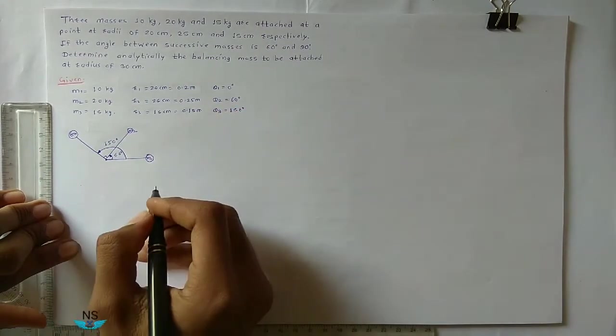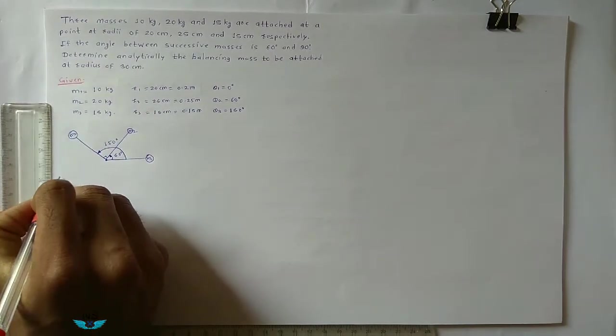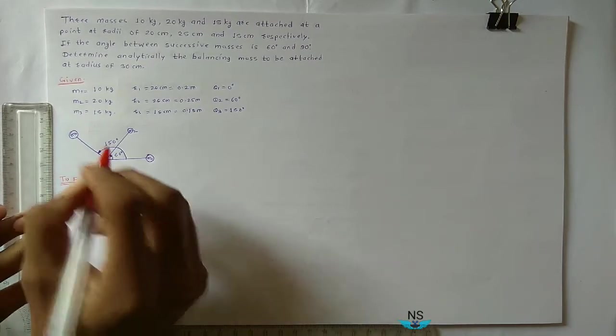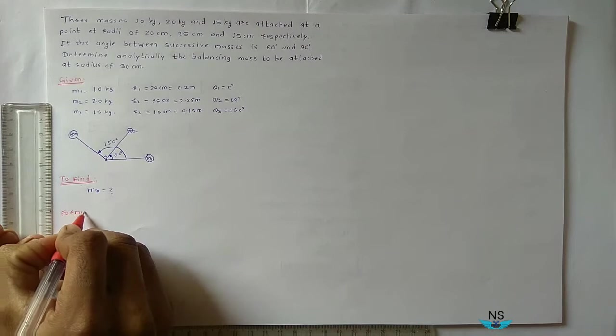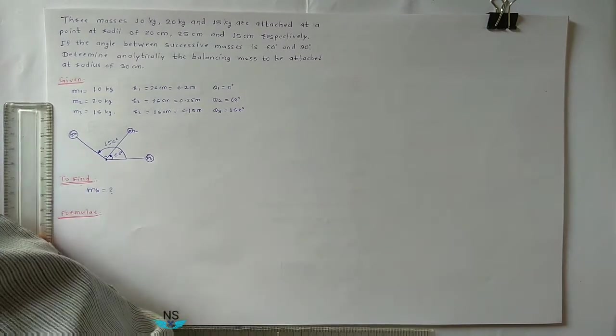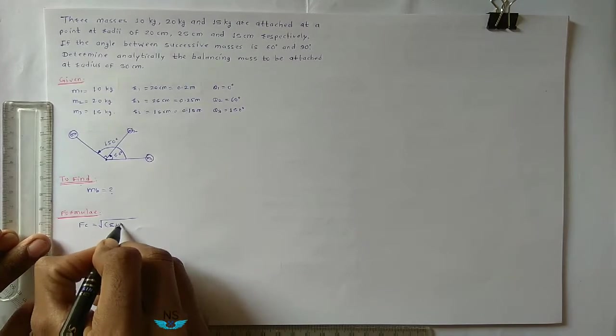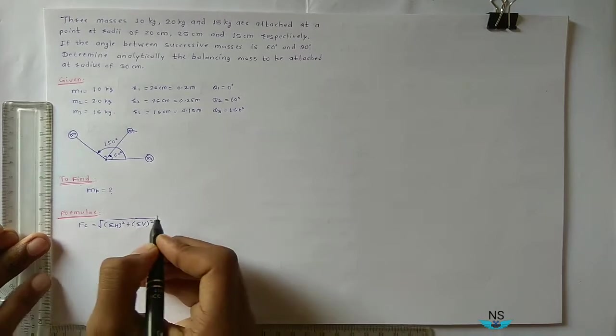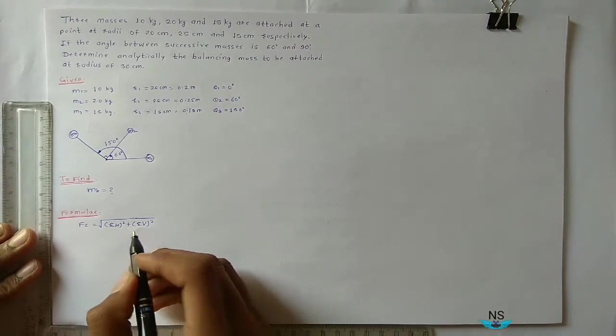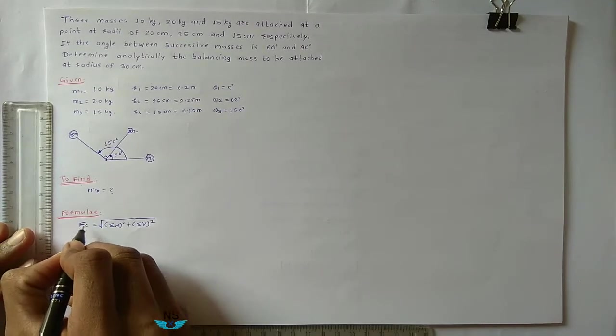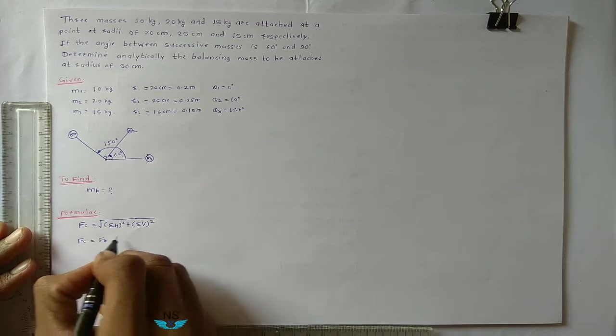Now what we have to find: balancing mass Mb. Which formulas we have to use? Fc is equal to root of summation H square plus summation V square. Summation of horizontal centrifugal force plus summation of vertical centrifugal force, from that you find resultant centrifugal force.